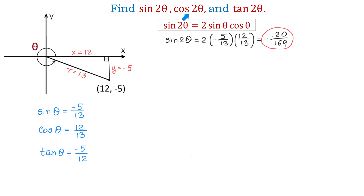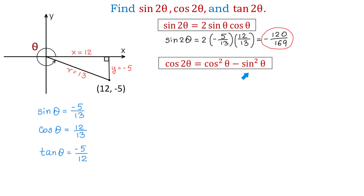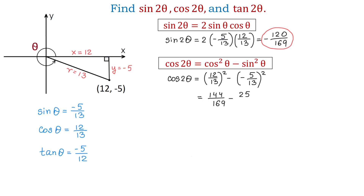Now let's evaluate cosine of 2 theta. The formula is cosine of 2 theta equals cosine squared of theta minus sine squared of theta. If we replace, we will have cosine of 2 theta equals 12 over 13 squared minus negative 5 over 13 squared. This equals 144 over 169 minus 25 over 169. Then 144 minus 25 is 119, so cosine of 2 theta equals 119 over 169.